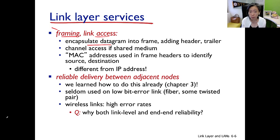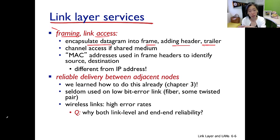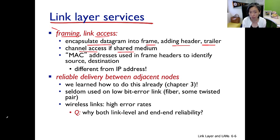Framing is about encapsulating datagrams into frames, and this is done by adding packet headers. In the link layer, you begin to see some protocols also add a packet trailer — control bytes added after the data. Now in case the link is a shared medium, we need to do channel access control to avoid collisions.